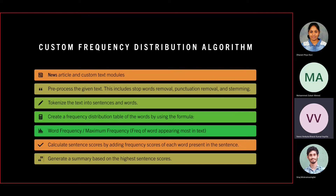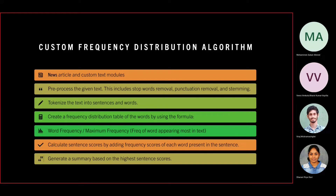Now let's discuss about the custom frequency distribution algorithm. It works on the principle of important keyword identification based on their frequency of appearances in the input text. For example, a noun appearing the greatest number of times would be classified as an important keyword. The news article and custom text modules use this custom algorithm to summarize text.